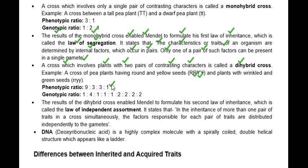Now let's look at the next law: the law of independent assortment. In the law of independent assortment, we have two genes — one for the recessive character and the other for the dominant character. In gametes, they assort independently.